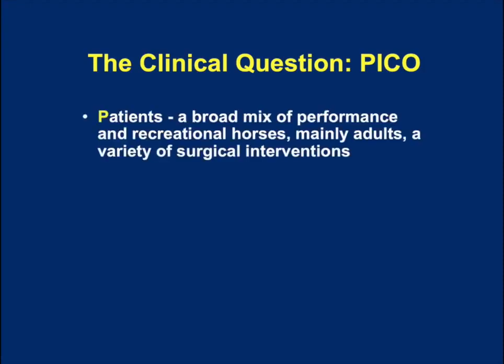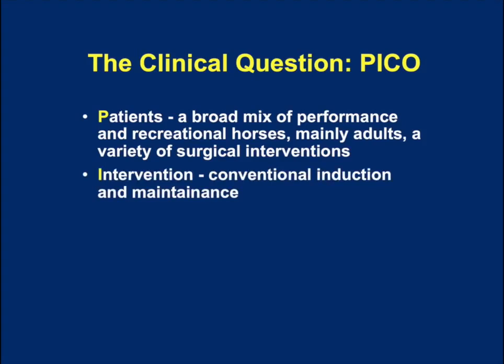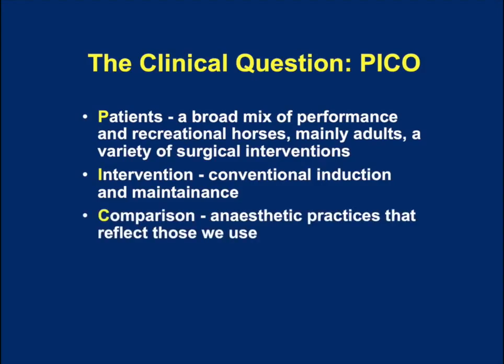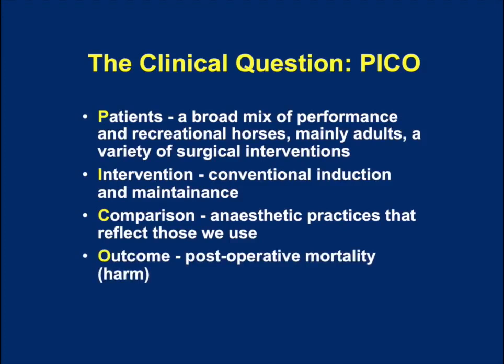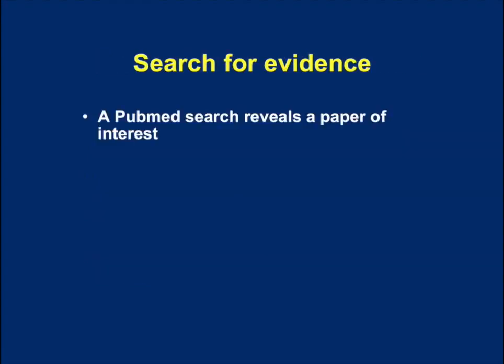Patients are going to be a broad mix of performance and recreational horses, mainly adults, with a variety of surgical interventions. We may choose to look at elective surgery only, or both elective and emergency surgery. The intervention is basically conventional induction and maintenance of anaesthesia. The comparison is anaesthetic practices that reflect those that we use, and the outcome is going to be post-operative or perioperative mortality.